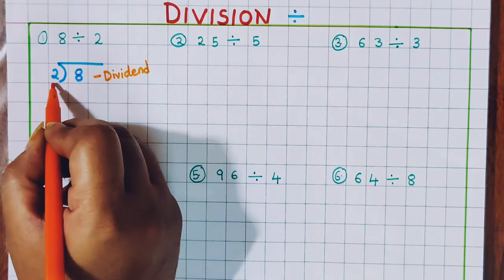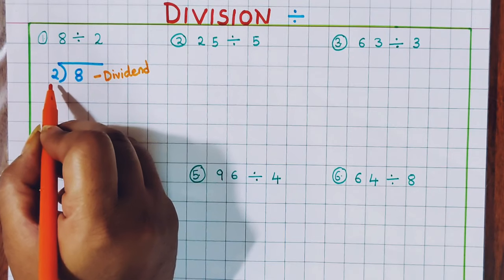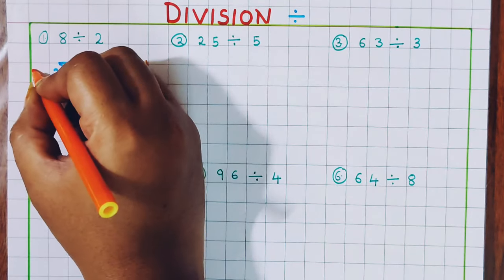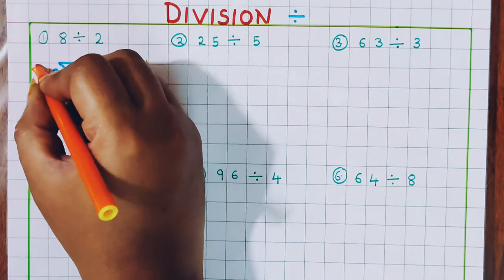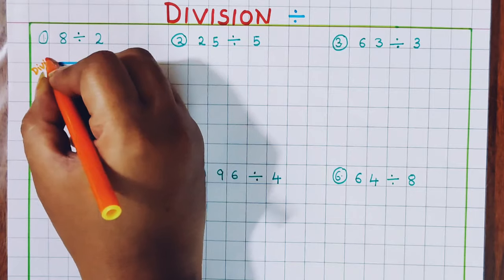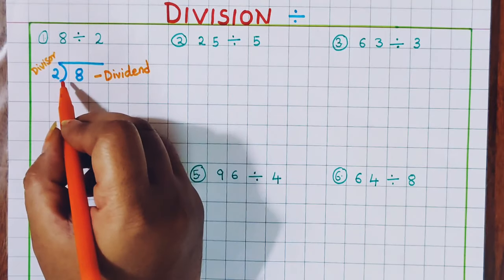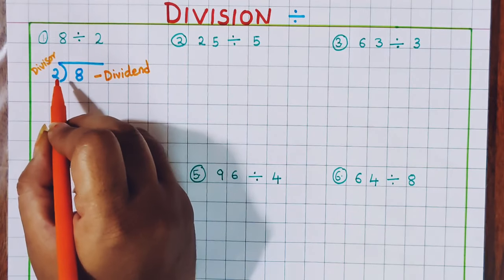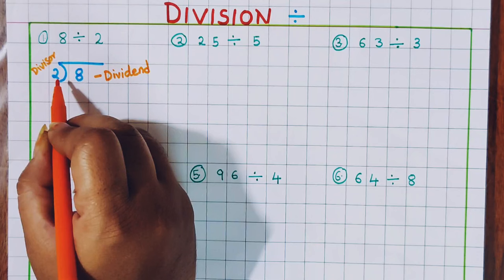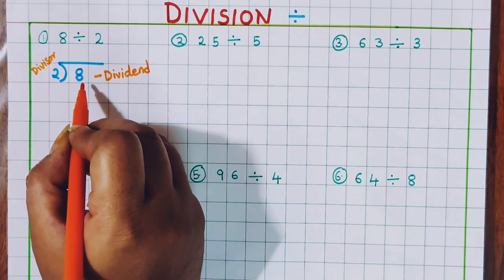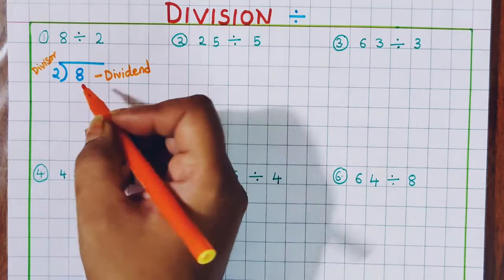Now what is the divisor? 2 is the divisor — that means the number with which we are going to divide. And the number which we are going to divide is called the dividend.